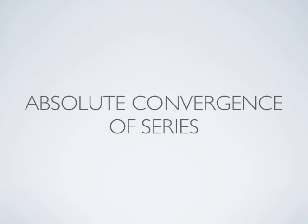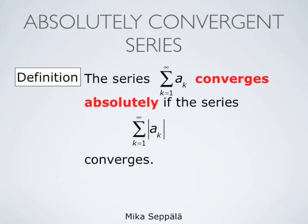Hello everybody, this is Mika Seppelä. In this video I discuss absolute convergence of series. The series summation k from 1 to infinity of ak is said to converge absolutely if the series formed by the absolute values of the terms of the original series converges — that is, if the series summation k from 1 to infinity of the absolute value of ak converges.